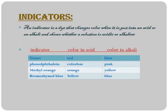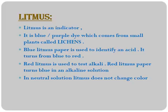In acid, litmus is red, while in alkaline solution its color becomes blue. Phenolphthalein gives no color in acid, but in alkaline solution it gives a pink color. Methyl orange can also be used to identify whether a solution is alkaline or acidic. Litmus is an indicator — it is a blue-purple dye which comes from small plants called lichens.